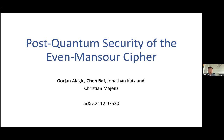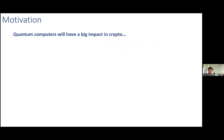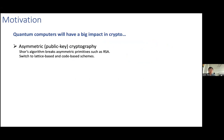Let me start with the motivation. As we know, quantum computers will have a big impact in crypto, and many commonly used cryptosystems will be completely broken once large quantum computers exist. In asymmetric cryptography, which uses a public key to encrypt data and a private key to decrypt data, since Shor's algorithm can solve the factoring problem in polynomial time, many asymmetric primitives such as RSA and Diffie-Hellman, which rely on the hardness of such problems, are totally insecure in the quantum world. Moreover, it seems feasible for a malicious attacker to simply store all encrypted data until it has access to a quantum computer.